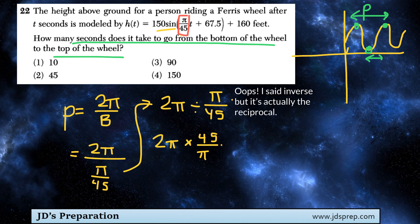So since we have a π in the numerator and denominator, we can cancel those out, and this becomes 2 times 45, which is 90.